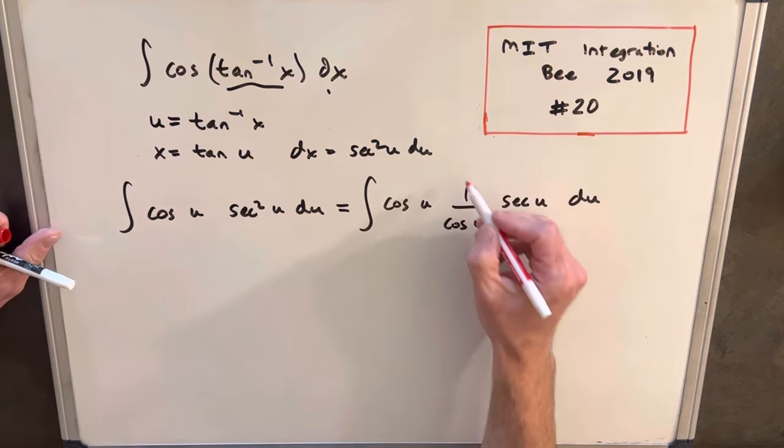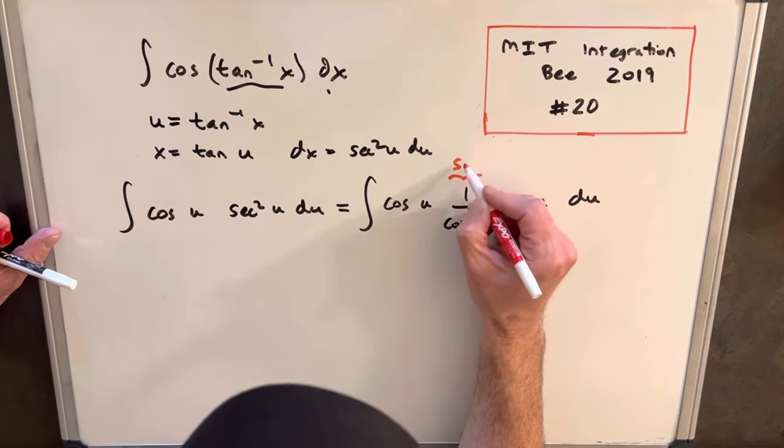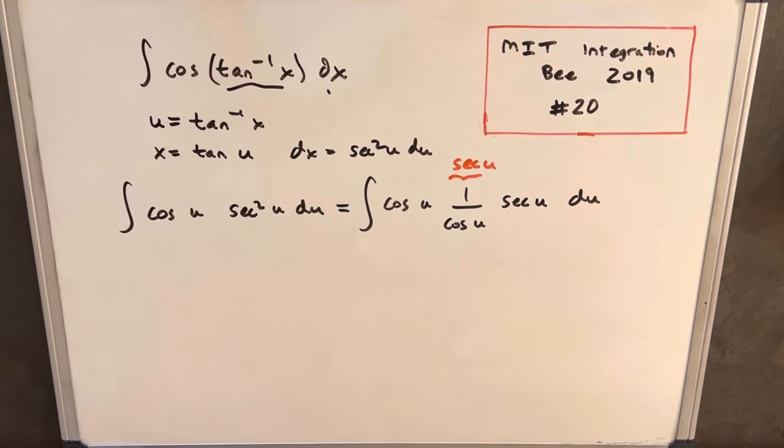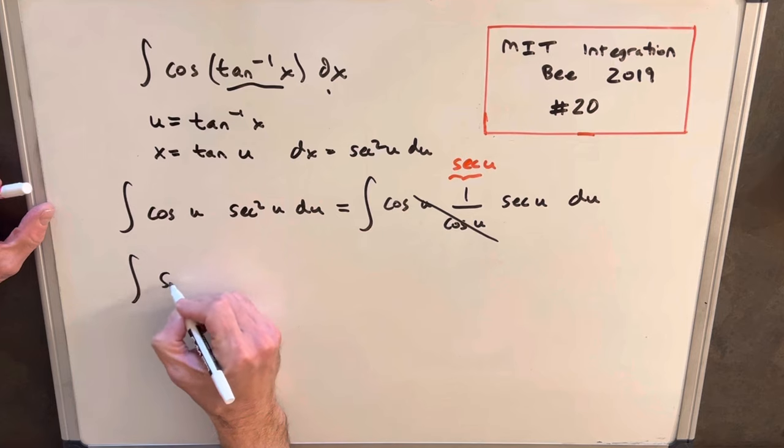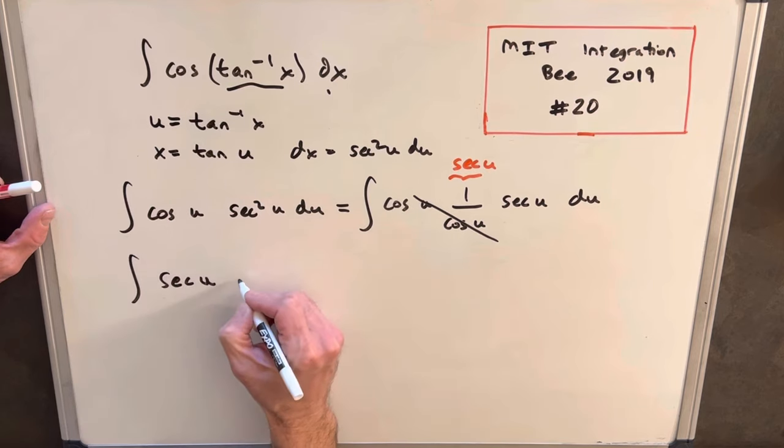I just rewrote one of our secants as 1 over cosine u, just to show clearly that we can cancel this out, and now we're just integrating secant of u du.